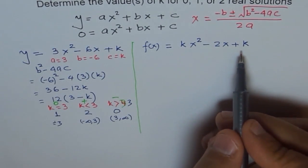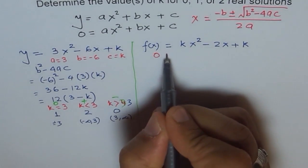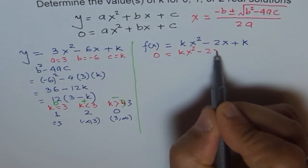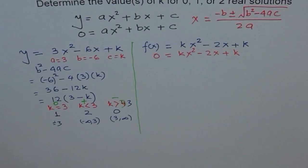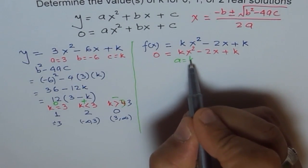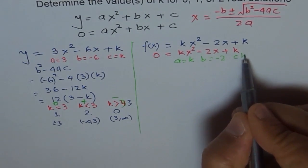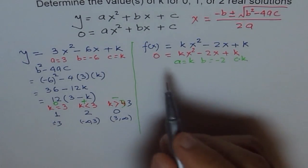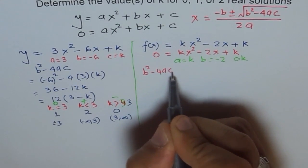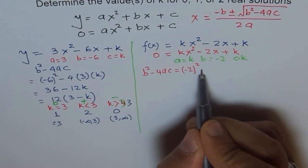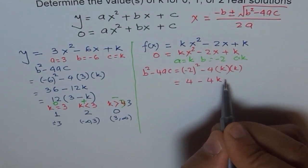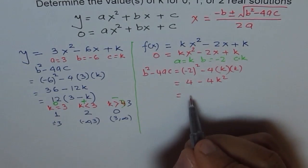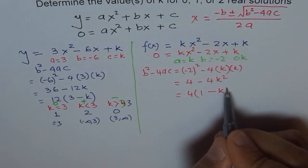We'll write the function f(x) equals kx squared minus 2x plus k. To find solutions, we equate it to 0: 0 equals kx squared minus 2x plus k. Here, a equals k, b equals negative 2, and c equals k. So b squared minus 4ac equals negative 2 squared minus 4 times k times k, which gives 4 minus 4k squared. We can factor out 4 to get 4 times (1 minus k squared).